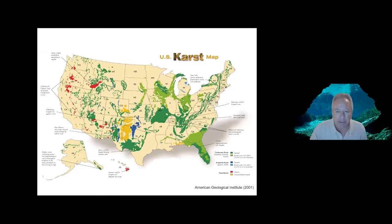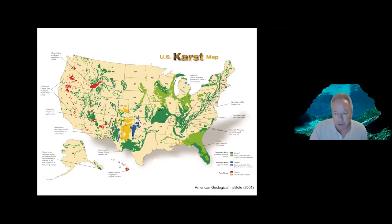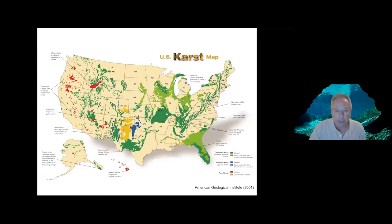Looking at the United States specifically, these are the primary karstic regions. The biggest concentration of large karst areas are in the central and eastern U.S., particularly in the Ozarks and the interior highlands of Kentucky and Tennessee, the Appalachians, the Edwards Aquifer in Texas, and then of course in Florida, primarily associated with the Florida Aquifer. In Florida and Georgia, portions of Alabama and South Carolina, we have the largest area of karst in the coastal plain. This is where I'll be focusing — on the aquatic, semi-aquatic, and terrestrial faunas associated primarily with this unique karst region.